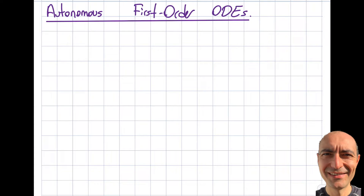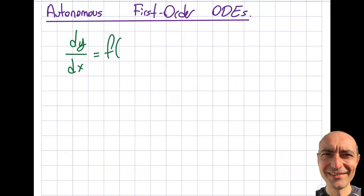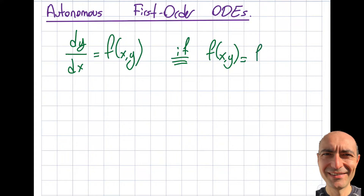Welcome everybody to this segment. I'm going to focus on autonomous first-order ODEs. The first thing I have to talk about is what exactly I mean by 'autonomous.' Although it may have something to do with autonomous cars, it has nothing to do with that in mathematics. Autonomous simply means — expressed for a first-order ODE as dy/dx = f(x,y) — that f is not a function of both x and y, but rather only a function of y.